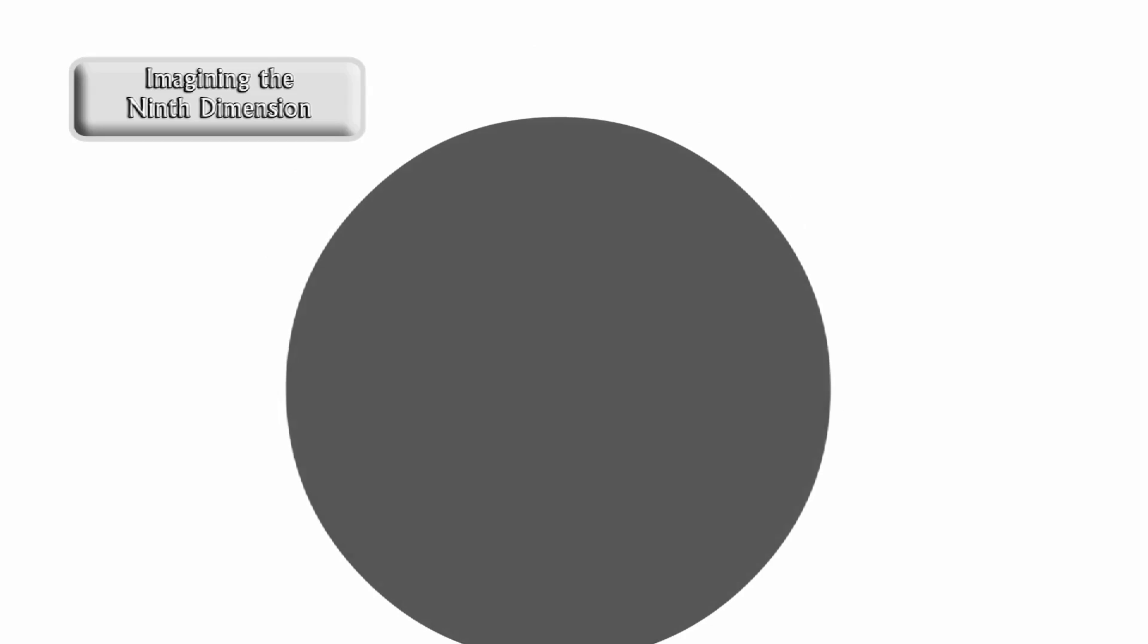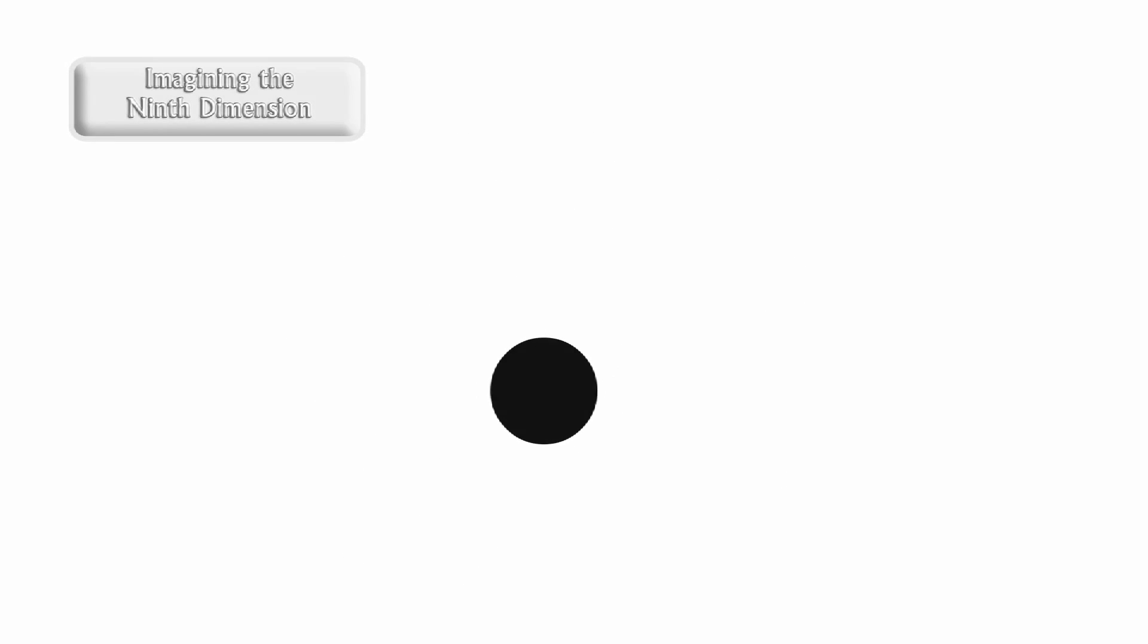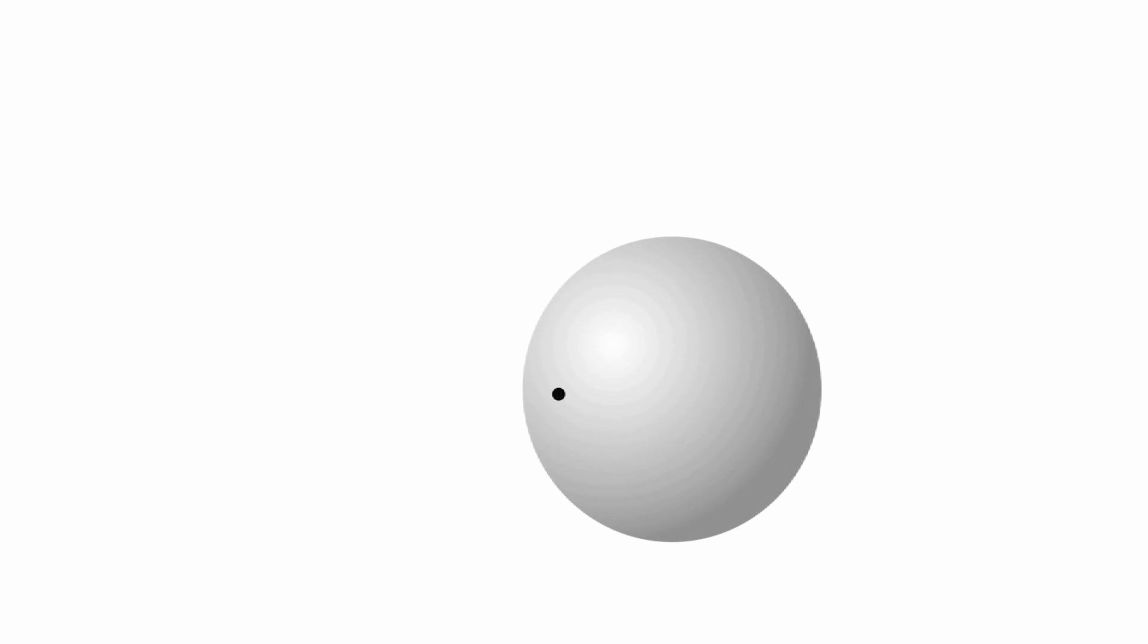The video for imagining the ninth dimension provides one way of thinking about this. It shows how each dimension, perceived in its entirety as a single timeless point, becomes a point on the surface of a finite but unbounded hypersphere in the next dimension.